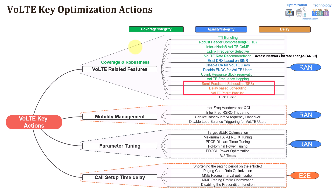Hello, everyone. Welcome to the new video and last session of the VoLTE end-to-end training campaign. In today's video, we are going to continue with VoLTE related features explanation. We are going to present or go through three features: the first one is semi-persistent scheduling, then we'll go through the VoLTE packet bundling, and both of them address the PDCCH congestion-related part.